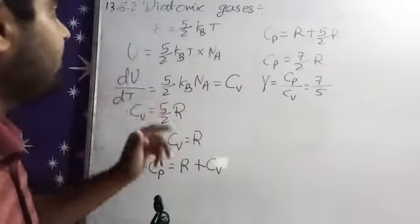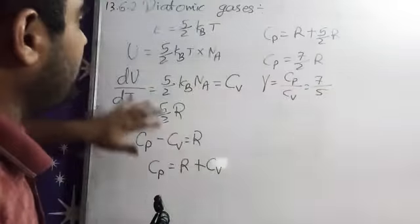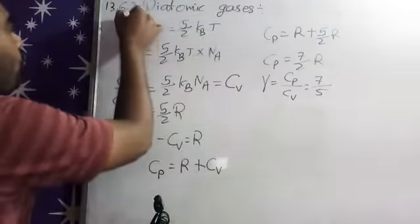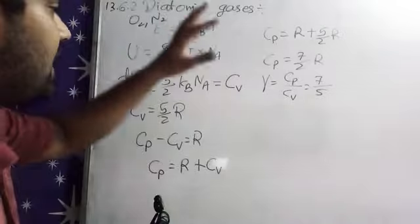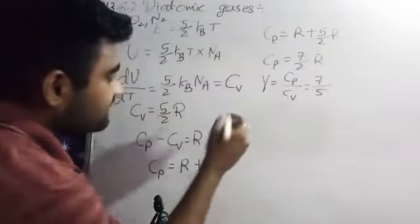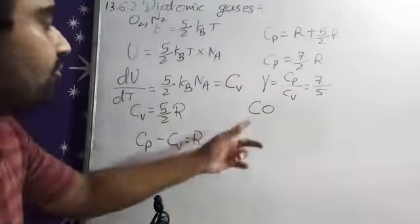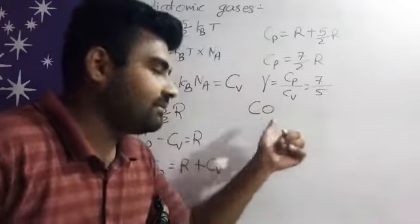See, if we are having diatomic gases, all the energies is for only O2 and similar like atoms. But if we are having CO atom, it is also diatomic, but it is different, this is carbon, this is oxygen.